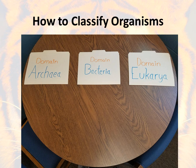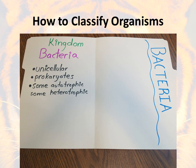If we go back and look at another folder, we could look at the domain Bacteria. It is very similar to Archaea. In the kingdom Bacteria, the organisms are unicellular, so they have one cell. They're prokaryotes, so those cells don't have a nucleus. And some are heterotrophic and some are autotrophic. So once again, those little differences are very small but very important.